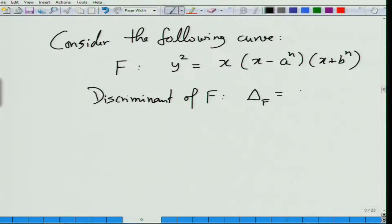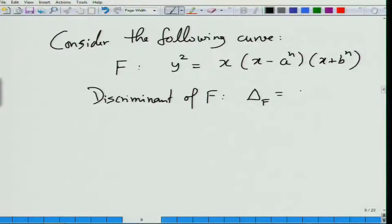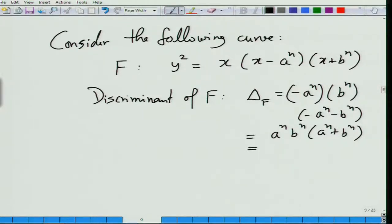The product of different roots for this curve: one root is 0, another is a to the n, and the third is minus b to the n. The differences are: 0 minus a to the n, 0 minus b to the n, and a to the n minus minus b to the n. So the discriminant equals a to the n times b to the n times a to the n plus b to the n.